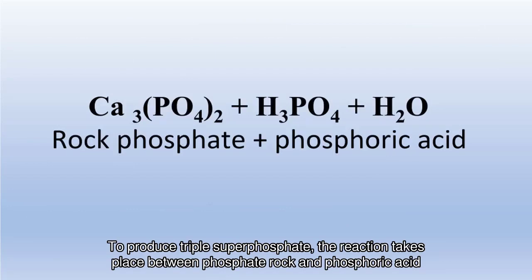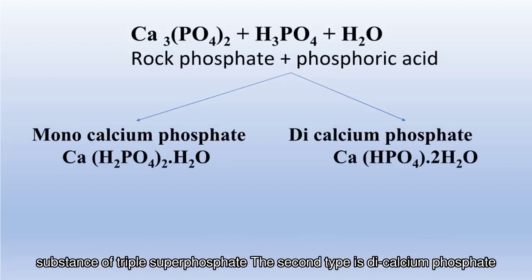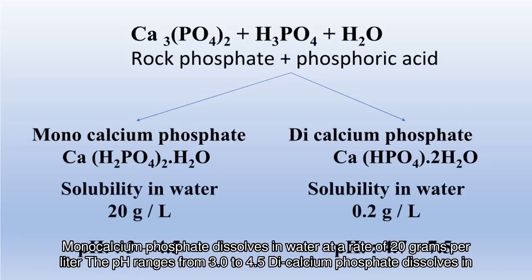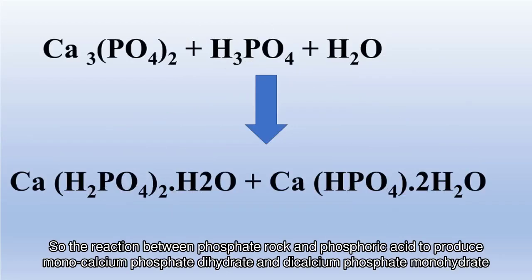To produce triple superphosphate, the reaction takes place between phosphate rock and phosphoric acid. The reaction results in two types of compounds: the first is monocalcium phosphate, which is the active substance of triple superphosphate, and the second is dicalcium phosphate. Monocalcium phosphate dissolves in water at 20 grams per liter, with a pH ranging from 3.0 to 4.5. Dicalcium phosphate dissolves at only 0.2 grams per liter and can be considered insoluble in water, with a pH ranging from 4.7 to 7.5.